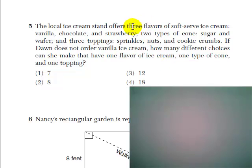So the problem tells us there are three flavors of soft-serve ice cream, but remember Dawn does not order vanilla ice cream, so there are really only two: chocolate and strawberry.